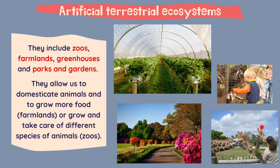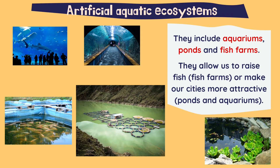We can see here a zoo, this is a greenhouse, and this is a park with a garden. They allow us to domesticate animals and to grow more food, for example in farmlands, or grow and take care of different species of animals, for example in zoos. The artificial aquatic ecosystems include aquariums, ponds and fish farms. They allow us to raise fish, like in these fish farms, or make our cities more attractive with ponds and aquariums.